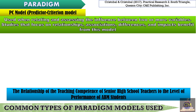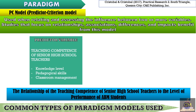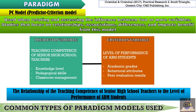For this example, we have the relationship of the teaching competence of senior high school teachers to the level of performance of ABM students. For our predictor variable, we have the teaching competence of senior high school teachers in terms of their knowledge level, pedagogical skills, and classroom management. The criterion variable would be the level of performance of ABM students in terms of academic grades, behavioral attributes, and peer evaluation results. It is also worth noting that the PC model uses a direct line instead of an arrowhead, as compared to the IV-DV model shown earlier.